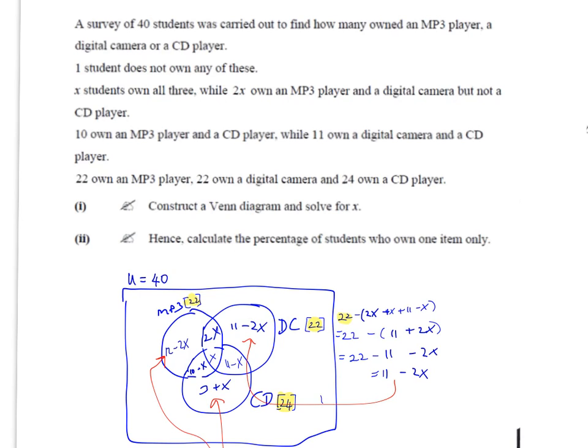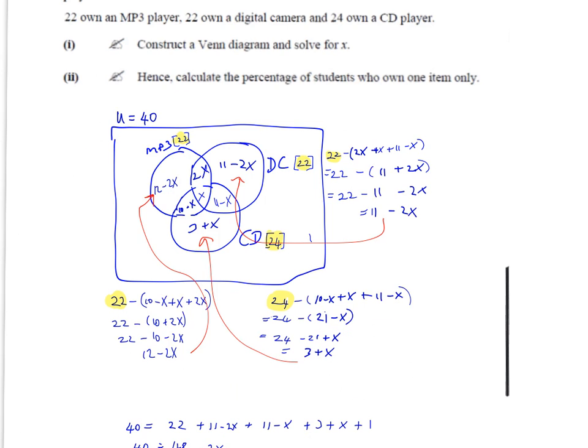The best way to do that is to do it in your rough work like I've done here. We say 22 minus, and then in brackets we add all of these guys: 2x plus x plus 11 minus x. We simplify that down, it becomes 11 plus 2x. If we multiply out the brackets, that means we're minusing these two elements, so it becomes minus 11 minus 2x. 22 minus 11 gives you 11, so we end up with 11 minus 2x, which goes in here.